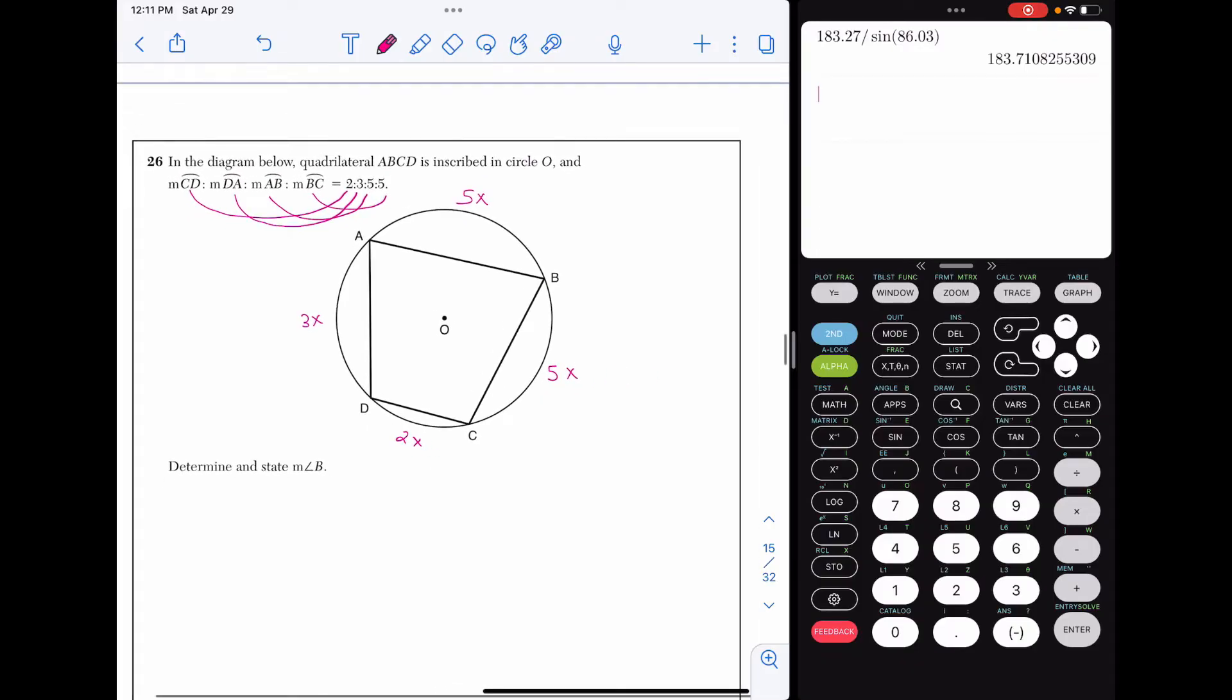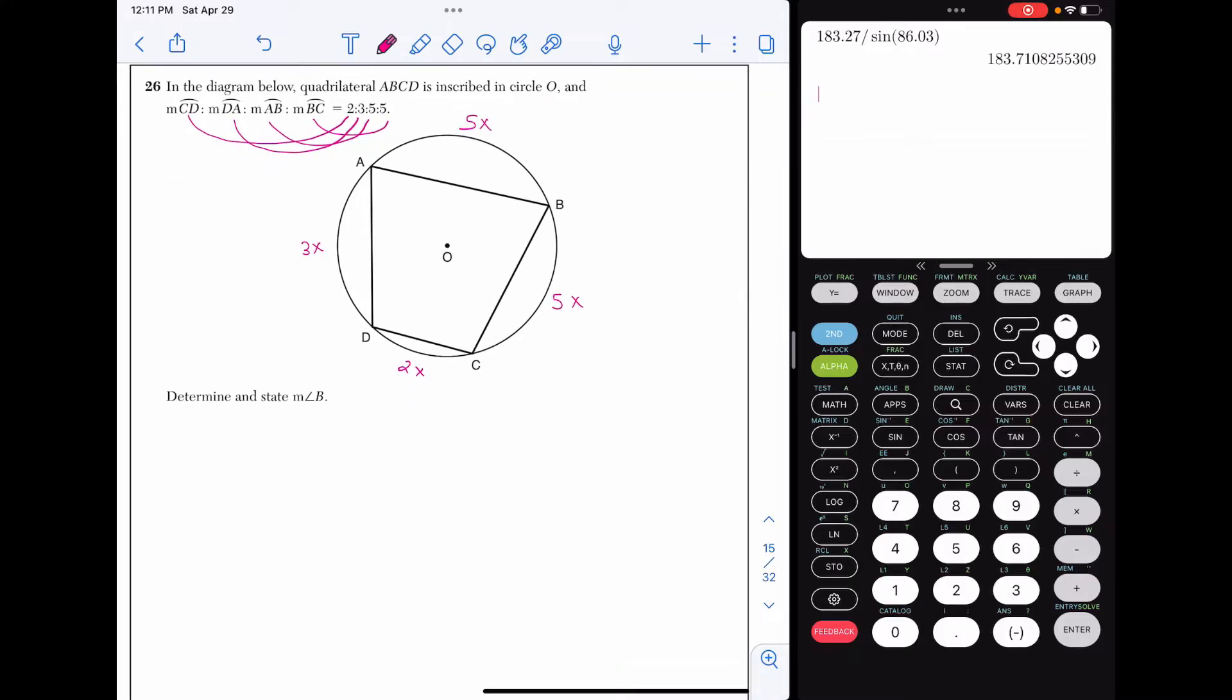Before we actually do some work to figure out the measure of angle B, we have to figure out what these arcs are. We know that in a circle we have 360 degrees, so we're going to add all of these arcs up to 360. That gives us 15x equals 360. Divide 360 by 15, and we get x is 24. Now, we're going to plug 24 back in for each of those arcs. So this arc here that was 2x is really going to be 48 degrees once I plug 24 in.